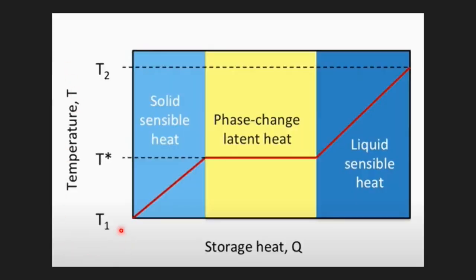As shown in the graph, a substance starts at temperature T1 in solid state. As heat is supplied, the temperature increases until T'. At T', the body undergoes a phase change — temperature remains constant while the solid is converted to liquid. Further heat supply raises the temperature from T' to T2, when the body has completely changed to liquid. The heat stored during temperature changes (T1 to T' and T' to T2) is known as sensible heat, while the heat stored during phase change is known as latent heat.